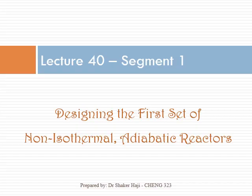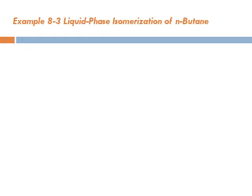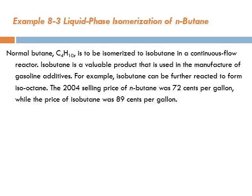Welcome to lecture 40, where we're going to design the first set of non-isothermal adiabatic reactors. Example 8.3, liquid phase isomerization of n-butane. Normal butane, C4H10, is to be isomerized to isobutane in a continuous flow reactor.